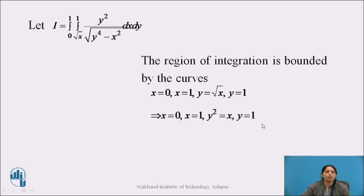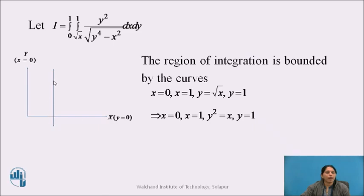Now we will draw the graph. Drawing the x-axis and y-axis: the equation x equal to 0 is the y-axis, which is our first curve. Then we draw the line x equals to 1, which is parallel to the y-axis. Now we draw the curve y² equal to x, which is a parabola, and we draw the line y equals to 1, which is parallel to the x-axis.